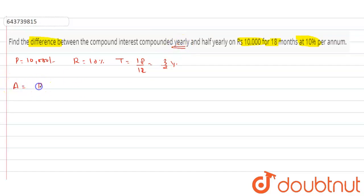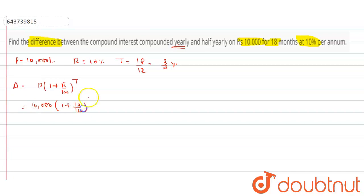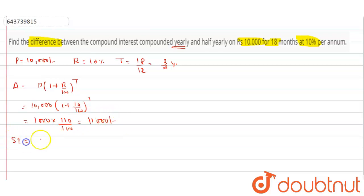First, we calculate the compound interest yearly. We need to calculate the amount for one year: A is equal to P times (1 plus R upon 100) to the power T. For one year, T is equal to 1. Putting in the values: 10,000 times (1 plus 10 upon 100) to the power 1, which equals 10,000 into 110 upon 100, giving us 11,000 rupees — the amount after one year.